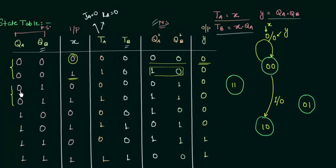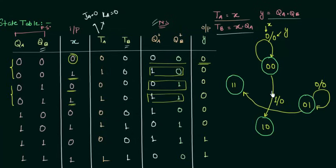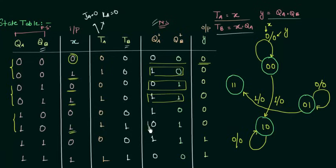When on S1 (QA=0, QB=1): if input is 0, I stay on S1 with output 0; if input is 1, I go to S3 (1,1) with output 0. When on S2 (QA=1, QB=0): if input is 0, I stay on S2 with output 0; if input is 1, I go to S1 (0,1) with output 0.